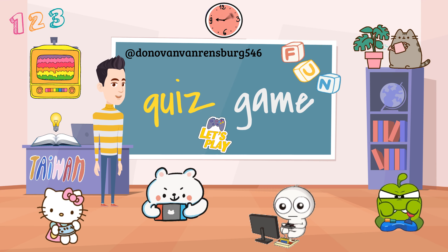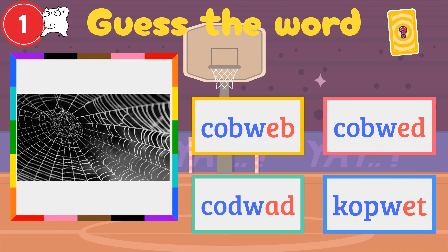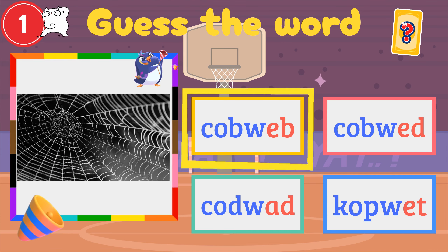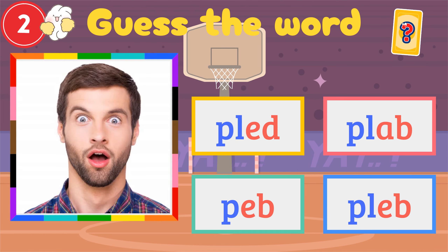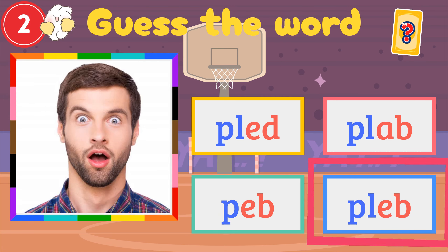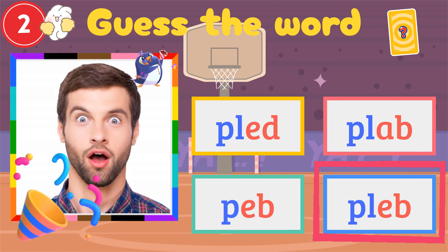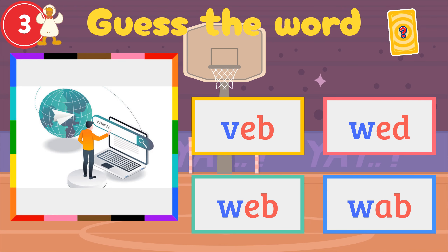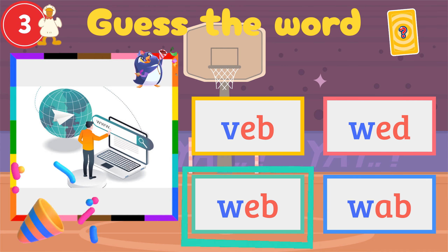It's time for a quiz game. Can you say the word? Look at the picture. Tap the right answer and say the word. Cobweb. Cobweb. Again. Tap the answer and say the word. Pleb. Pleb. Last one. Tap the answer and say the word. Web. Web.